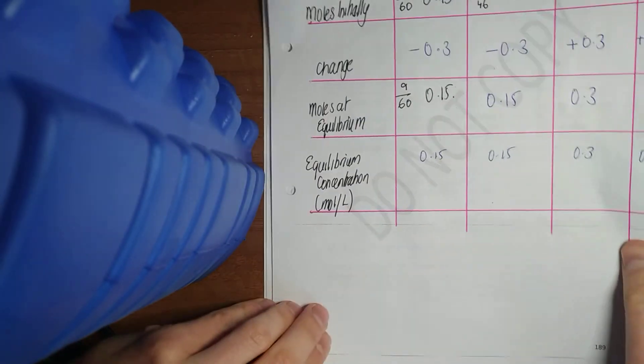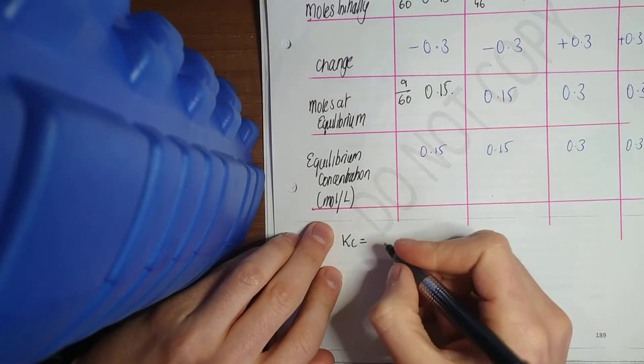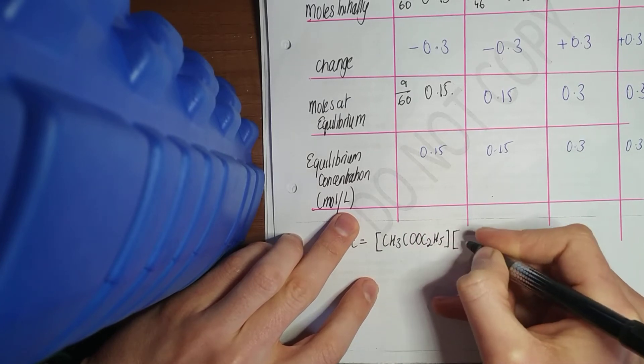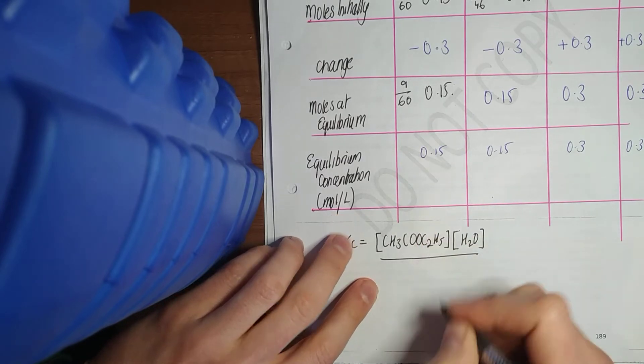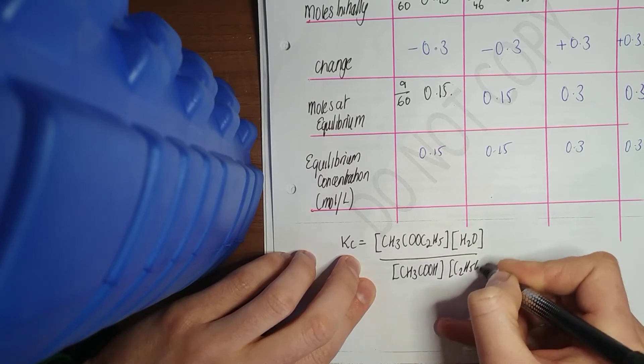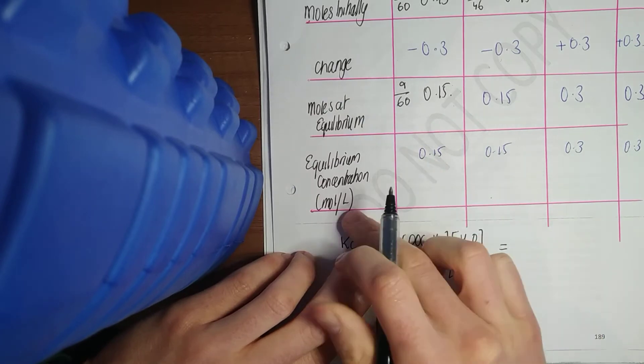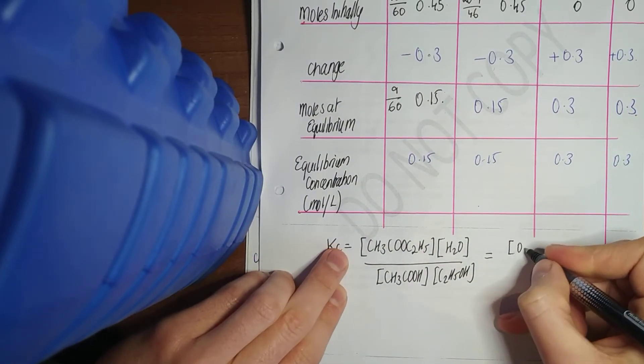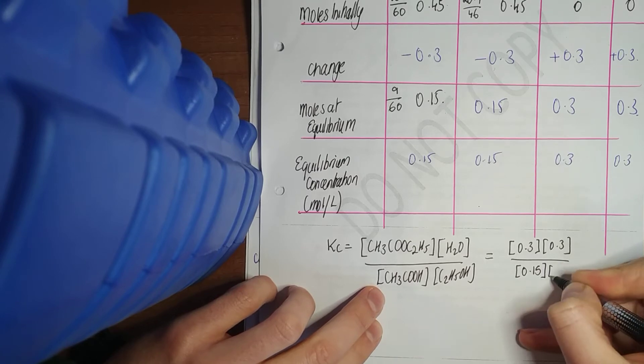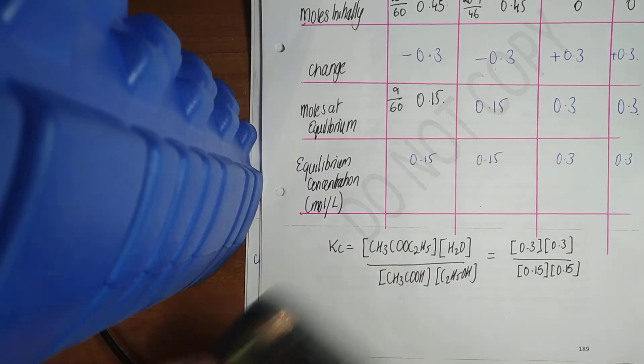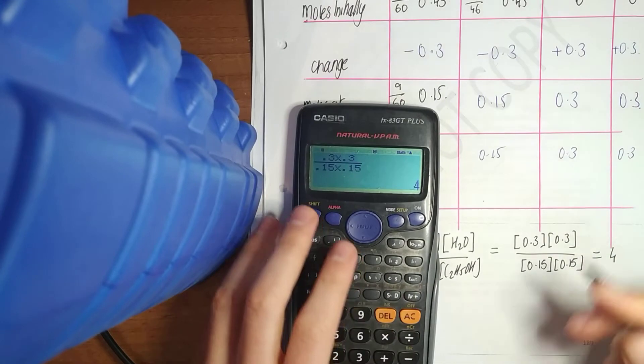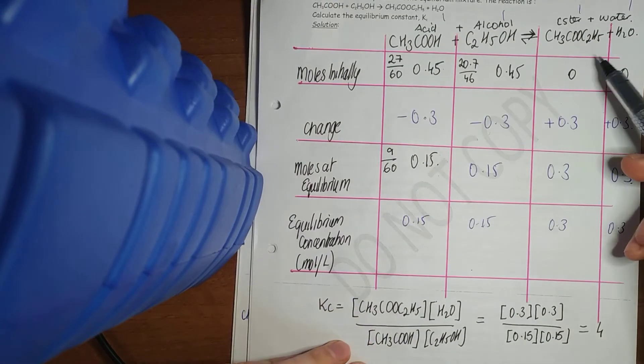Now, to get our general KC, it's your products over your reactants. So there have my product, my ester, my CH3COOC2H5, times my H2O. Square brackets means moles per liter. And my CH3COOH and my C2H5OH. Throw in these figures in moles per liter that I have down here. There's my two products. My 0.3 times my 0.3, all over 0.15 times 0.15. Bung that into your calculator. 0.3 by 0.3 over 0.15 by 0.15, we get a value of 4. Equilibrium lies on the right-hand side. We're forming more products than the reactants.